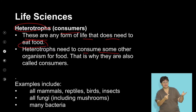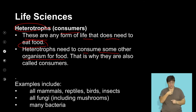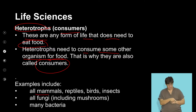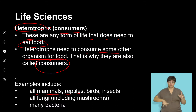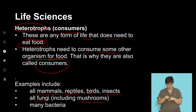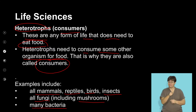Heterotrophs need to consume other organisms for their food — that is why they are called consumers. Secondary consumers are generally all mammals, which include reptiles, birds, and insects. All fungi, including mushrooms, as well as many bacteria, are called heterotrophic consumers.